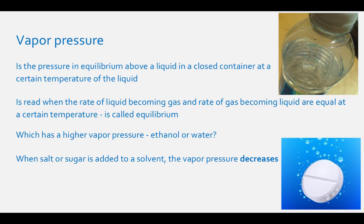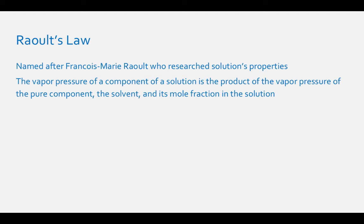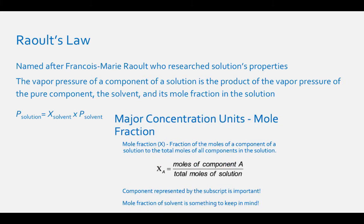A discussion of vapor pressure leads us right into Raoult's Law, which was named after François-Marie Raoult, a French scientist who studied solutions' properties. Raoult's Law states that the vapor pressure of a solution is the sum of the vapor pressures of each of its components. The vapor pressure of a component of a solution is the product of the vapor pressure of the pure component—the solvent—and its mole fraction in the solution. Back in the concentration units video, I mentioned that the mole fraction of the solvent becomes important, and here is where this comes true.